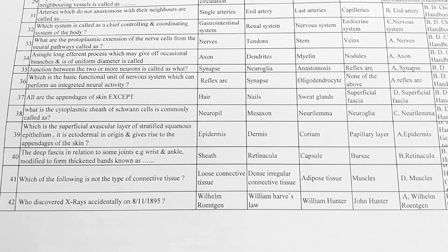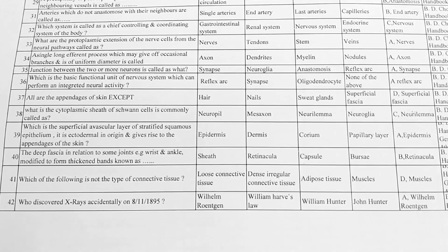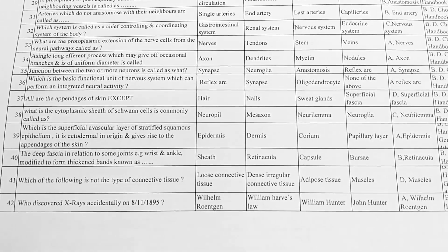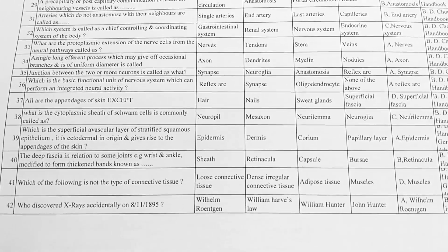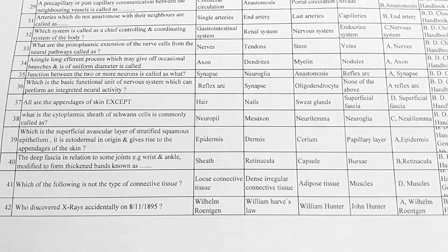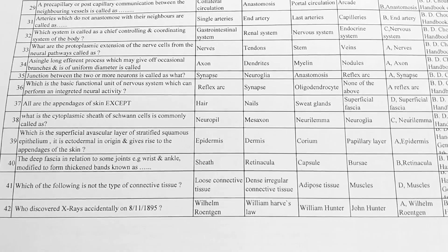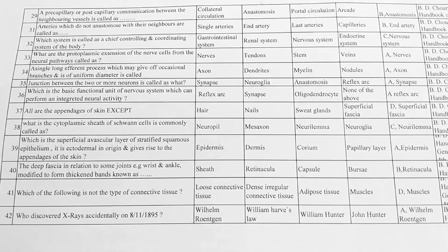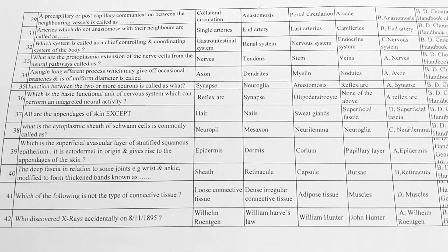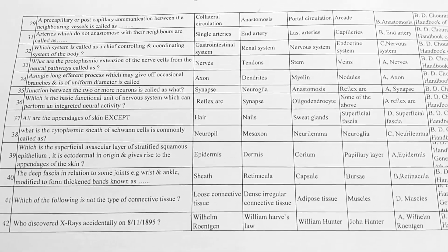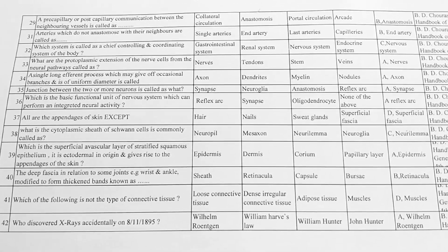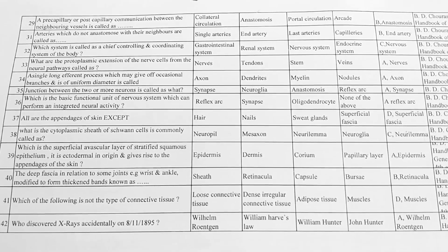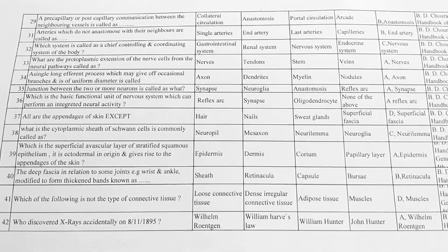Next, the deep fascia in relation to some joints — for example wrist and ankle — is modified to form a thickened band known as — options: A. sheath, B. retinacula, C. capsule. Option B is correct, retinacula.